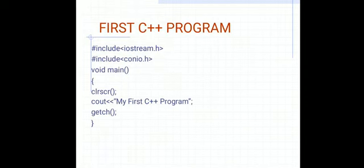Here is the first C++ program. The output of this program will be 'My first C++ program'. To display this on screen, as I mentioned earlier, the first two lines are preprocessing statements: we write hash include iostream.h, then hash include conio.h. After that, the main function starts — as you all know, every function starts with an opening curly bracket and ends with a closing curly bracket.